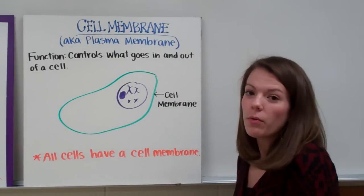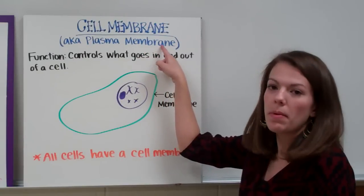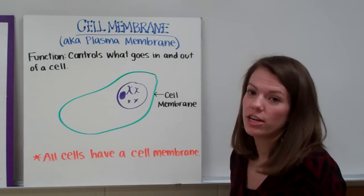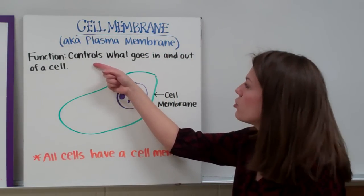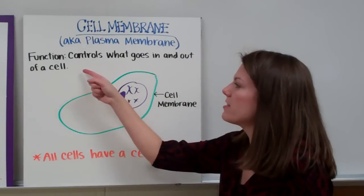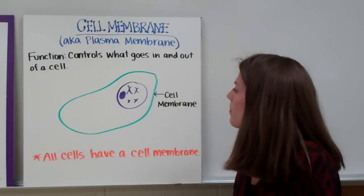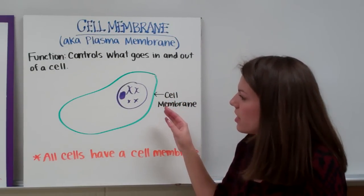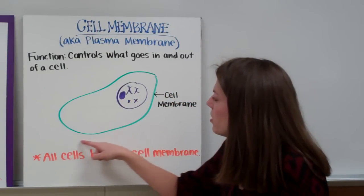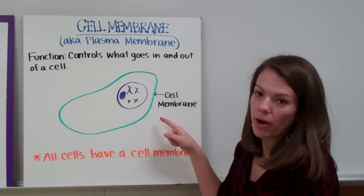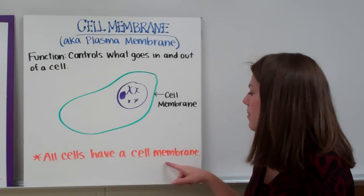The next organelle is the cell membrane, also known as the plasma membrane — you can use those two terms interchangeably. The function of the cell membrane is that it controls what goes in and out of a cell, which is very important for maintaining a stable balance inside cells. In our sketch, the green region is the cell membrane. All cells have a cell membrane.